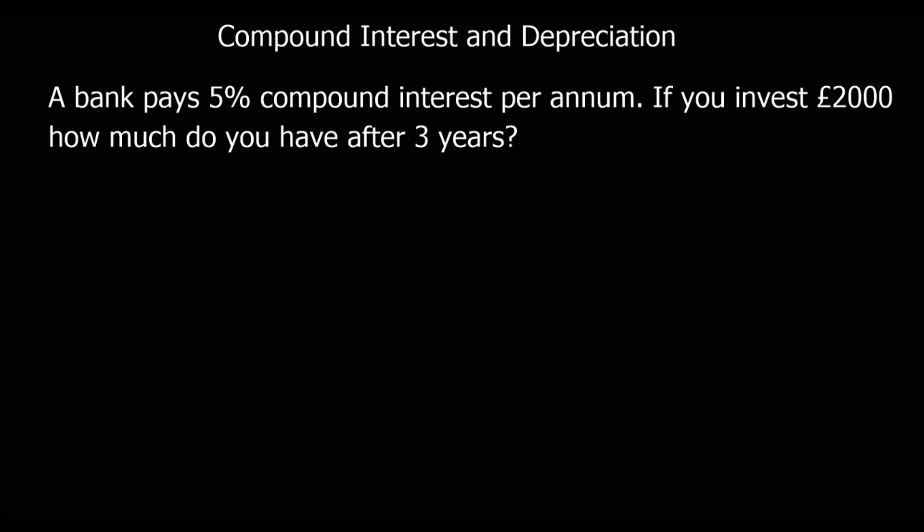Compound interest or depreciation is a repeated percentage change. So if I've got £2,000 earning 5% interest per annum — per year — I've got to add on 5%, then get that new amount and add on 5% again, and then add on 5% again. It is not the same as just finding 5% and multiplying it by 3, because the amount you're earning interest on in the 2nd and 3rd year are different — the amount of money goes up every year, so you earn interest on a different amount.